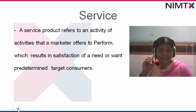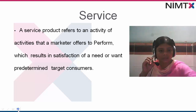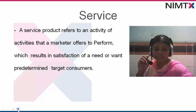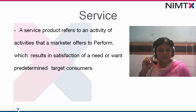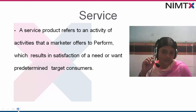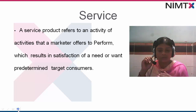Need is what all human beings basically have. When we talk about want, it is the specific type of need we are experiencing. For example, if we have a thirst need, we may want water, fruit juice, or a soft drink — that is known as a want. So a product refers to an activity or set of activities, because in today's modern organizations the concept has totally changed.